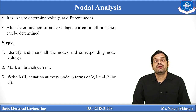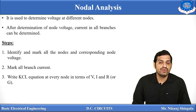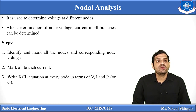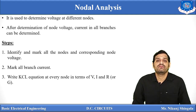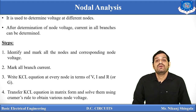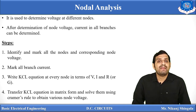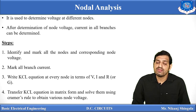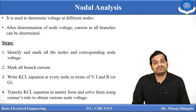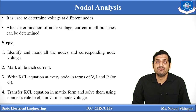After marking the branch currents, apply KCL at each and every node and write the current equations in terms of V, I, and R — or conductance if conductances are given. After obtaining all KCL equations and converting them into the ratio V/R, convert those equations into matrix form and solve using Cramer's rule to obtain the various node voltages. After node voltages are obtained, we can easily determine all branch currents.